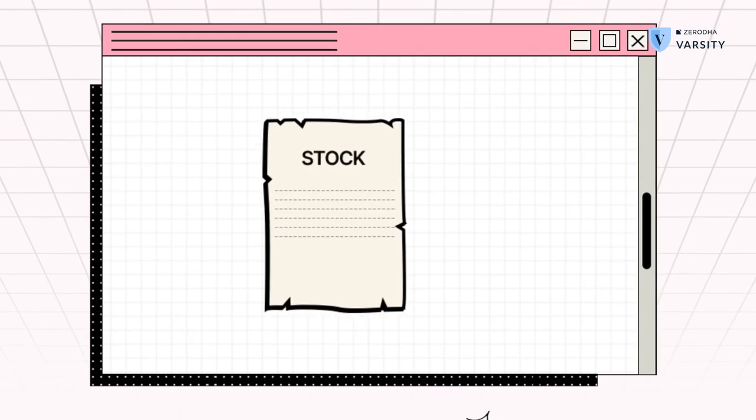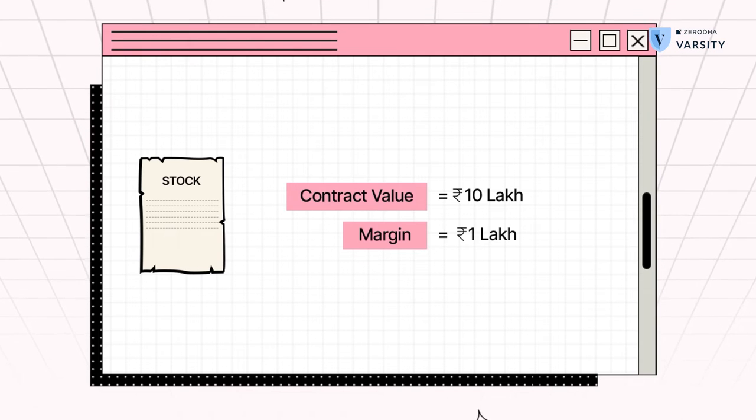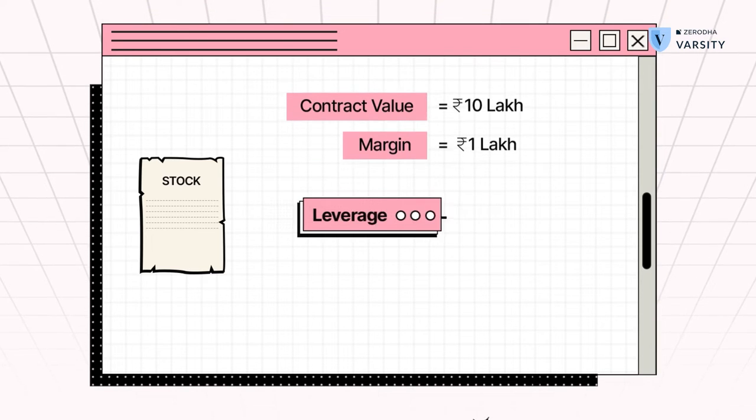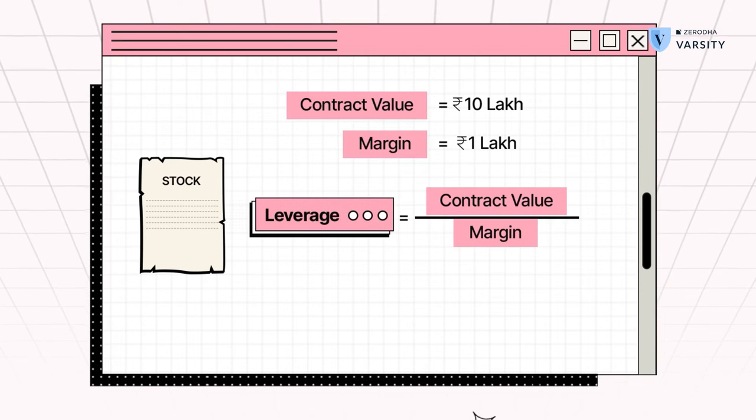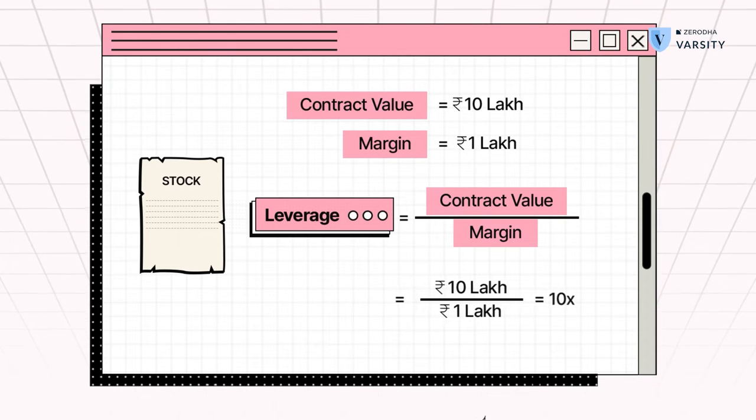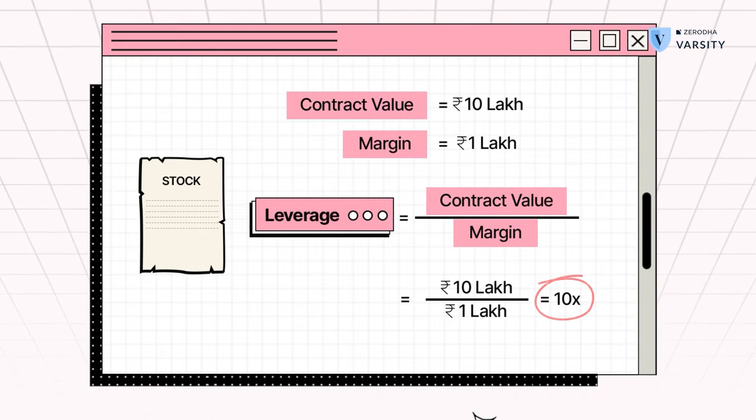So let's see how this is calculated. We'll put some numbers and understand how this actually works. Let's understand leverage in the context of a stock. Now let's suppose the contract value of a stock you're trading is 10 lakh rupees and the margin you're putting up is 1 lakh. So as you can see the leverage over here can be calculated if you divide the contract value divided by margin. So 10 lakh rupees divided by 1 lakh gives you a number 10. This means that you are leveraged 10x or 10 times compared from your margin to the contract value.